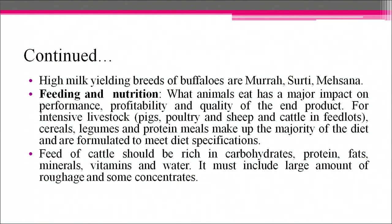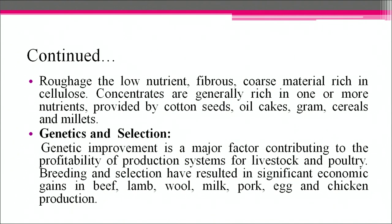Feeding and nutrition: what animals eat has a major impact on performance, profitability and quality of the end product for intensive livestock such as pigs, poultry, sheep and cattle in feed lots. Cereals, legumes and proteins make up the majority of the diet and are formulated to meet diet specifications. Feed of cattle should be rich in carbohydrates, protein, fats, minerals, vitamins and water. It must include large amounts of roughage and some concentrates. Roughage is low-nutrient, fibrous, coarse material rich in cellulose. Concentrates are generally rich in one or more nutrients, provided by cotton seed, oil cakes, gram, cereals and millets.